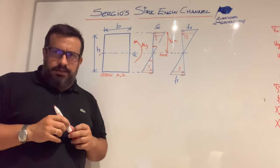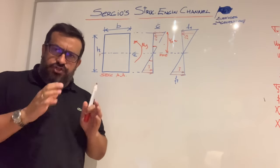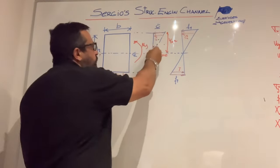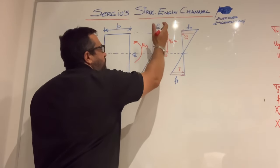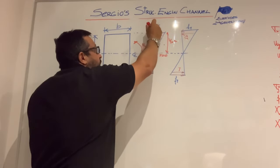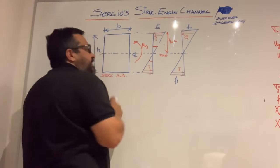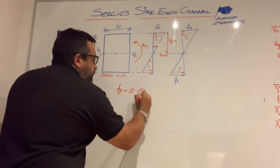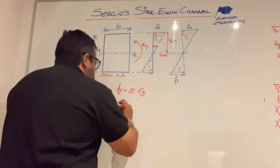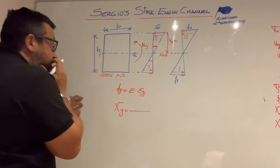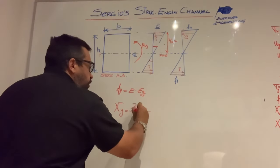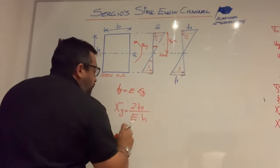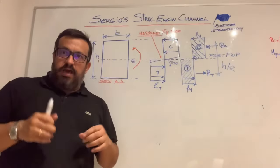Once we get the value for the yield bending moment, we have to estimate the curvature associated with that bending moment. To recall what curvature is: it is the angle or slope between the strain plane of deformation and the transversal section relative to the global axis of the beam. In accordance with Hooke's law, we get this expression for the elastic range. The yield curvature associated with the elastic bending moment is equal to 2·Fy divided by Young's modulus multiplied by H, the depth of the section.